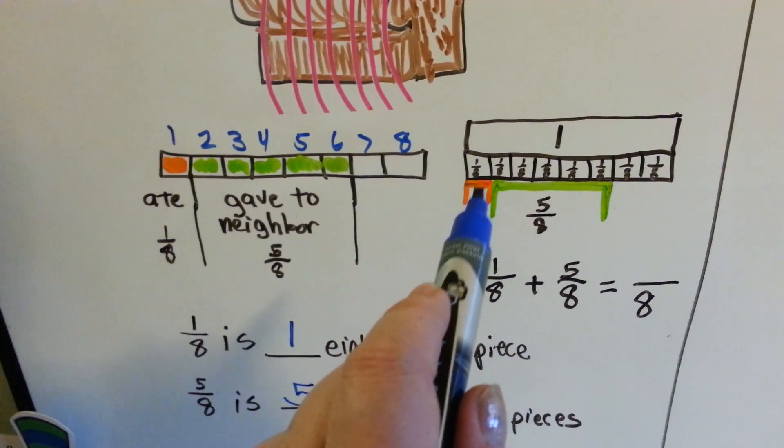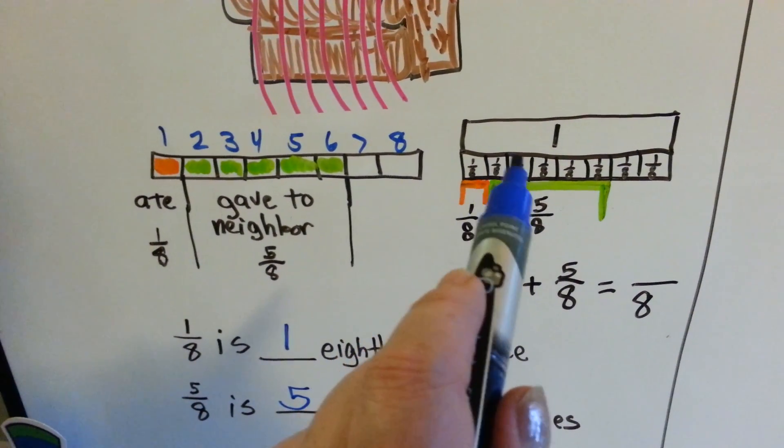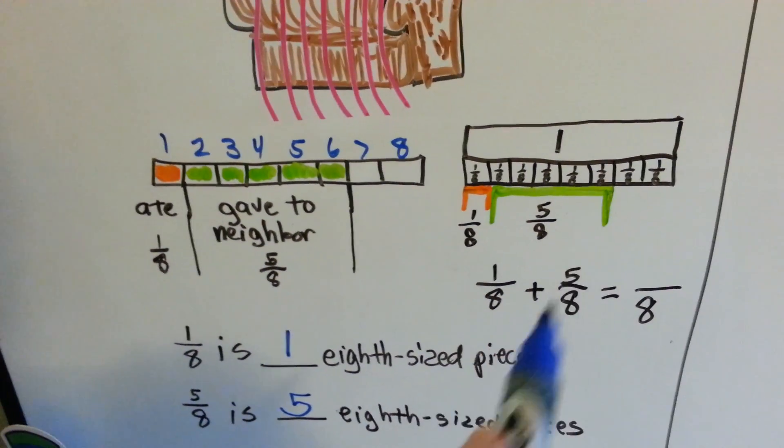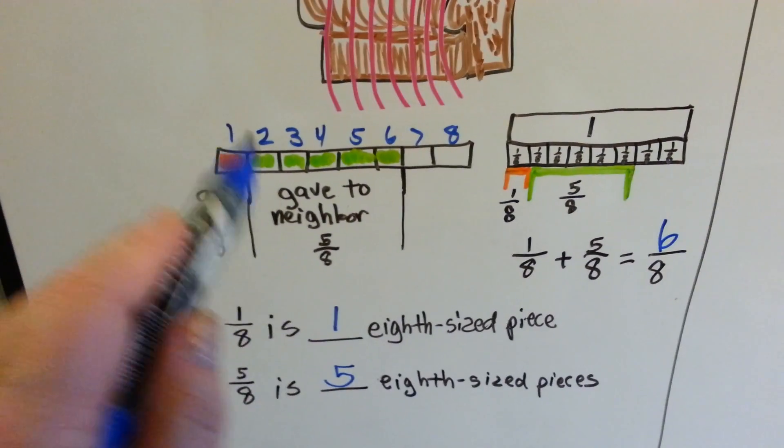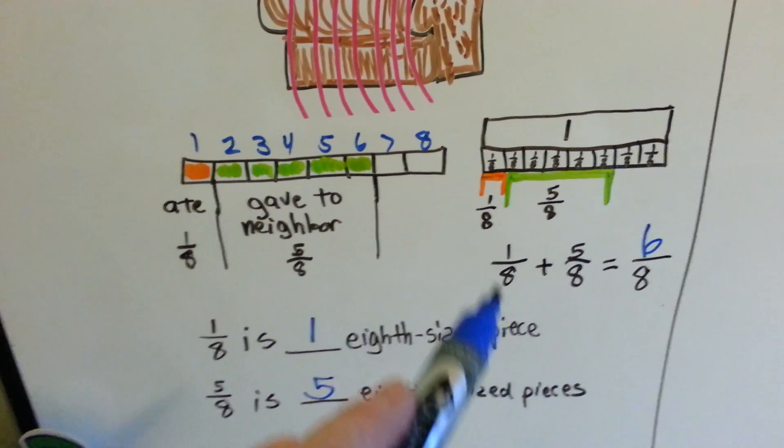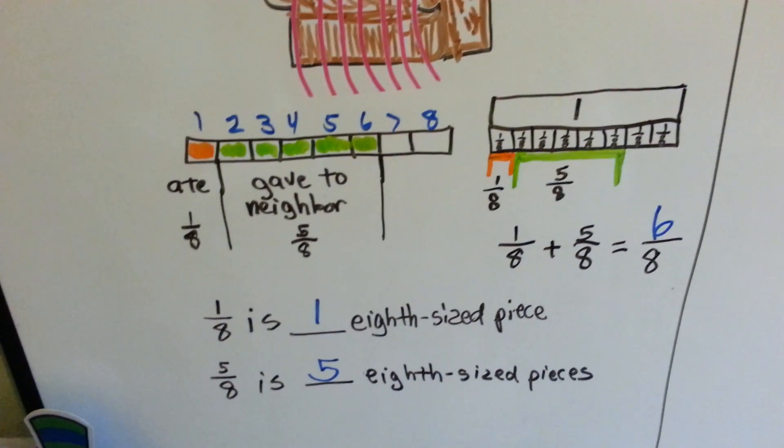1 eighth slice and 5 eighths together is 1, 2, 3, 4, 5, 6 eighths. Each slice was 1 eighth. She ate 1 and 5, which is 6 of them. So that's 6 eighths.